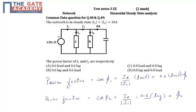So if we check the options, there is only option B that has 0.6 lead for i2.